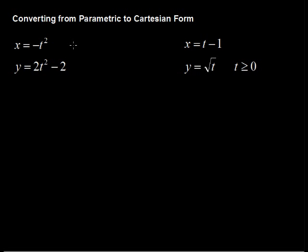In this video, we'll walk through a couple of examples of converting from parametric set of equations into a Cartesian form of the equation, that is eliminating the parameter, here it's t, and then ending up with an equation that's just in terms of x and y.